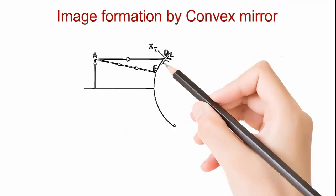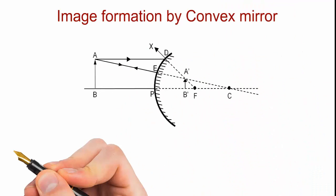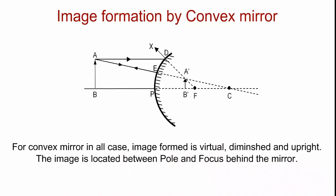Now image formation by a convex mirror. In all cases, image formed is virtual, diminished, and between pole and focus and behind the mirror as you can see from this image.